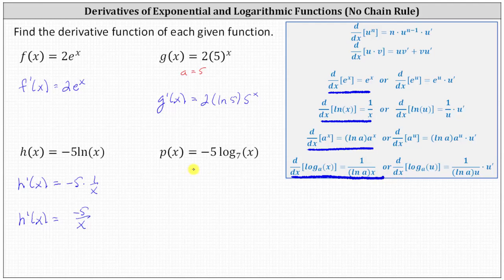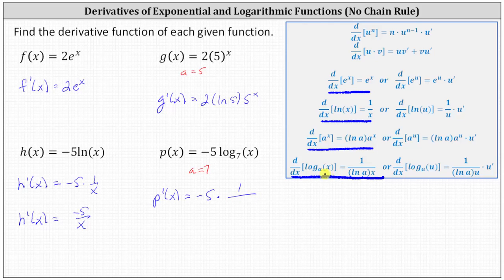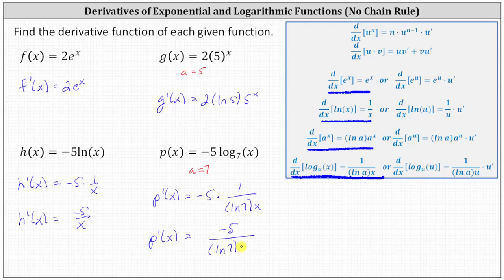Because we have log base seven, we know a is equal to seven, which indicates p prime of x is equal to the derivative of negative five log base seven of x, which equals negative five times the derivative of log base seven of x, which would be one divided by the product of natural log seven and x. Simplifying, p prime of x equals negative five divided by the product of natural log seven and x.